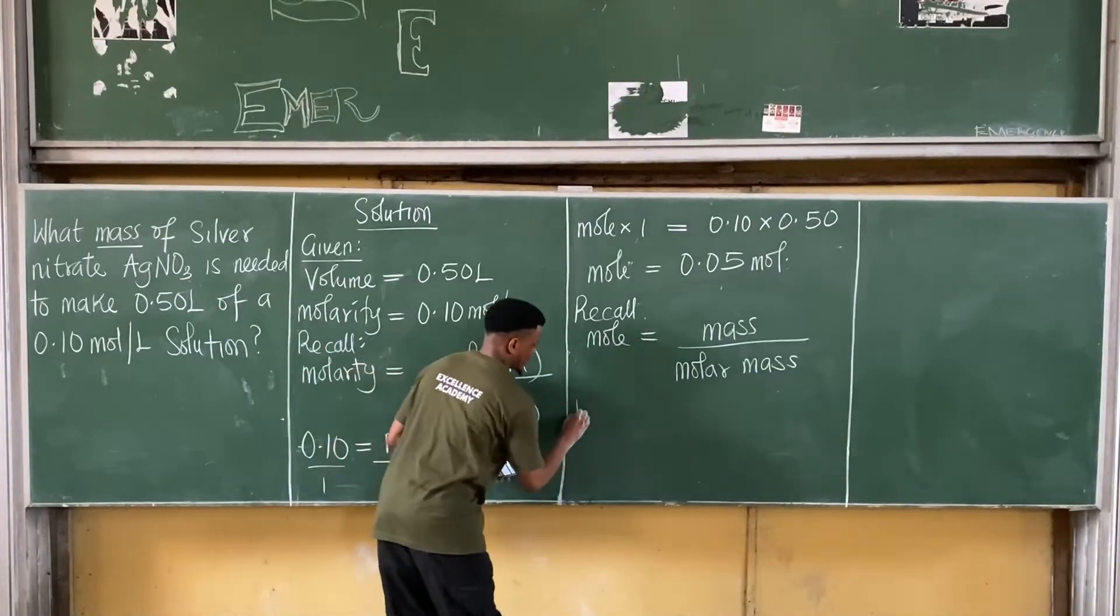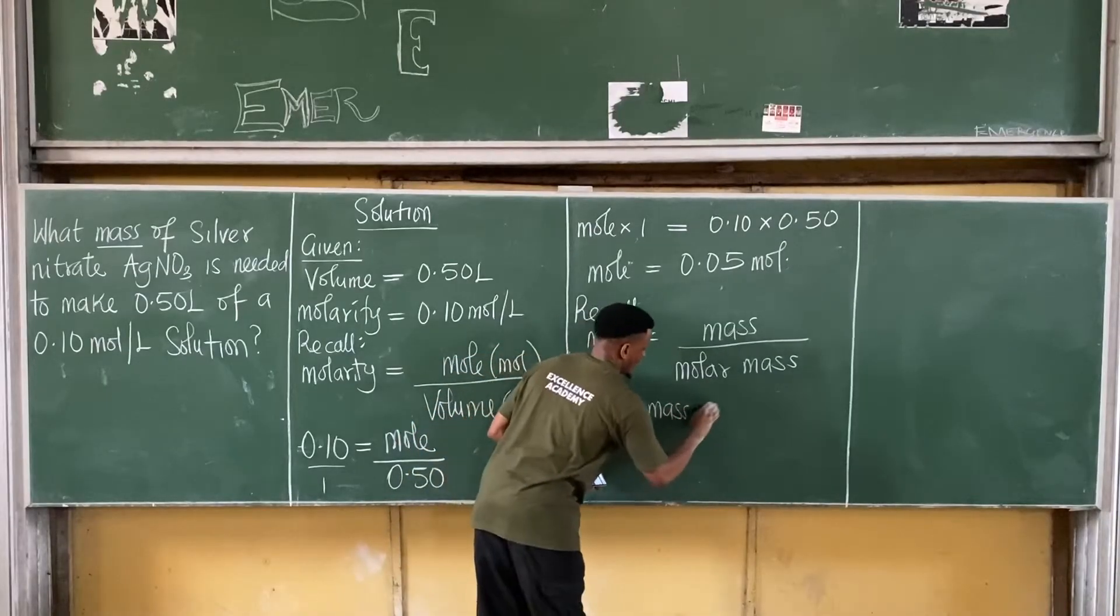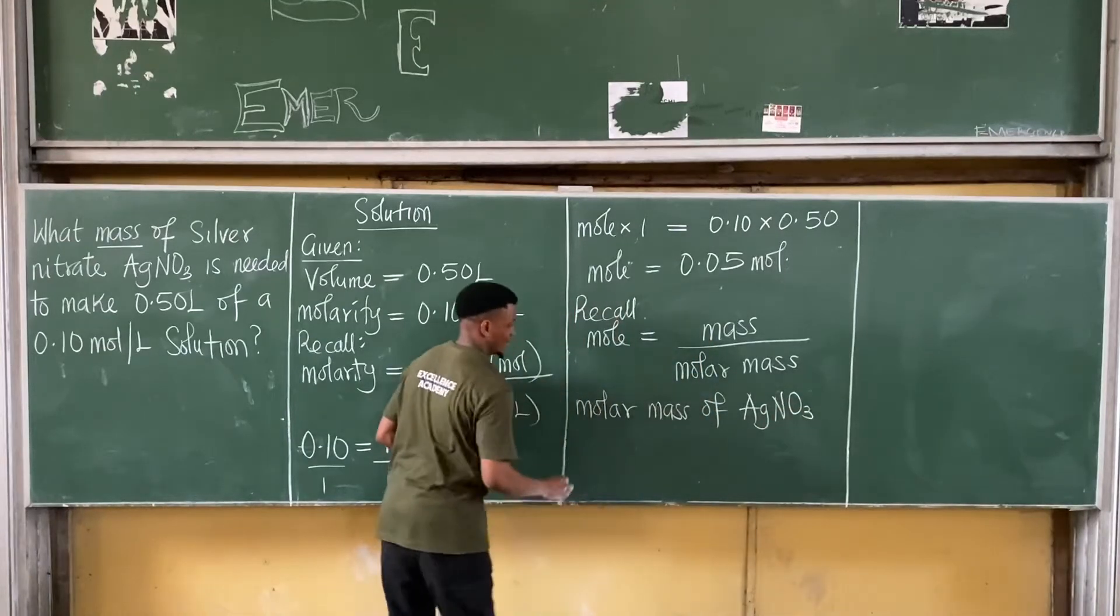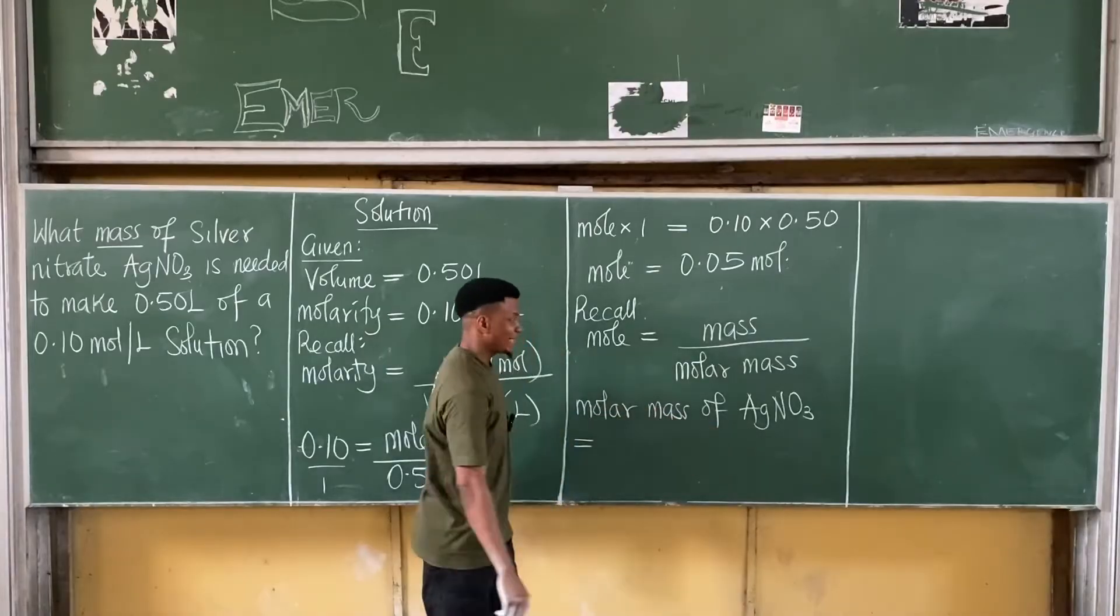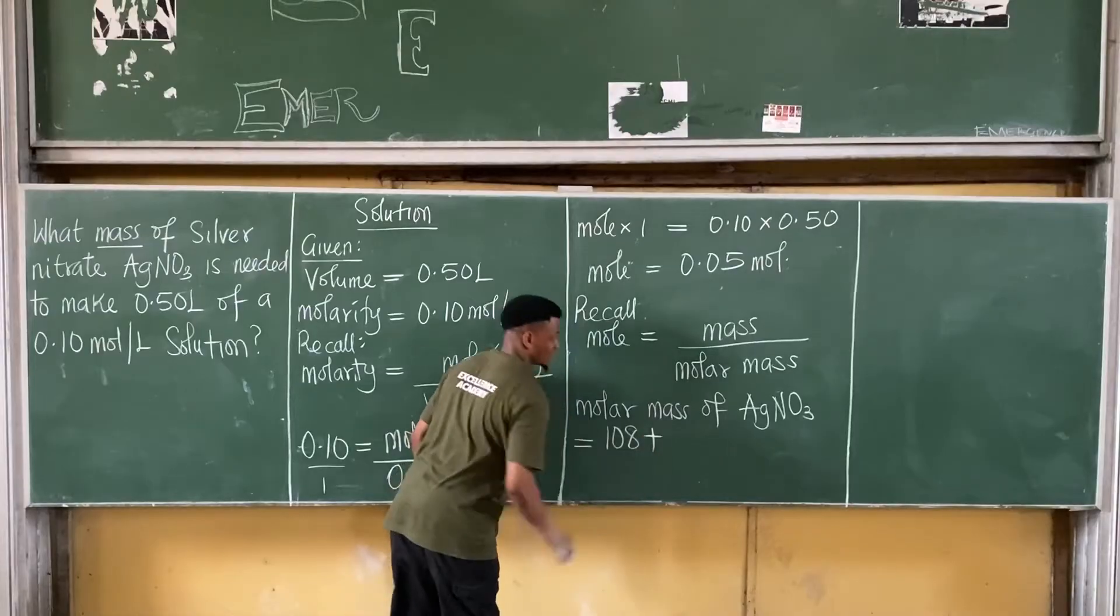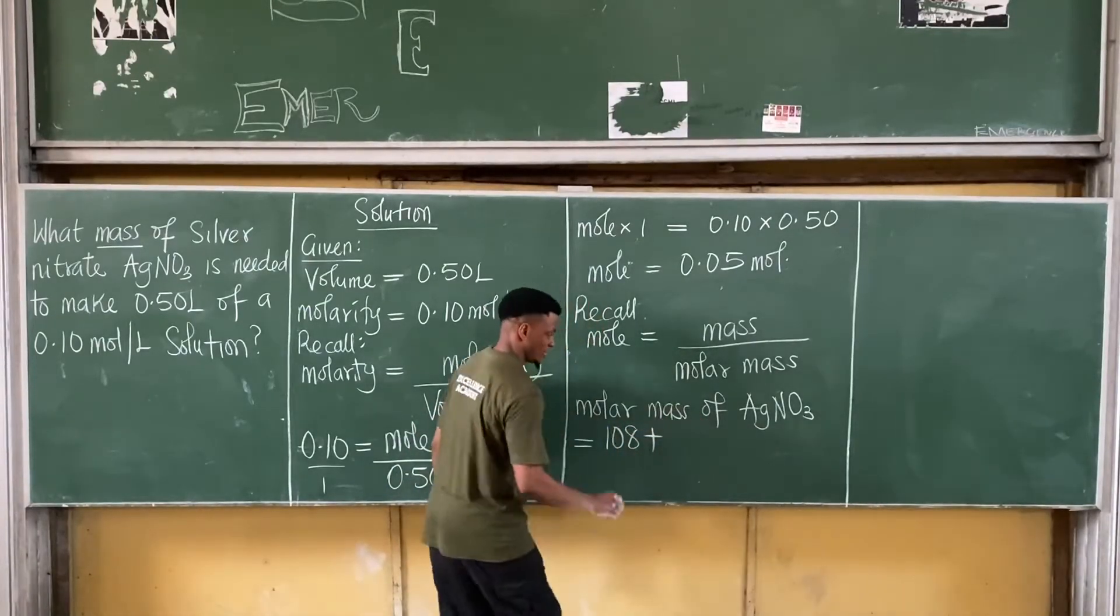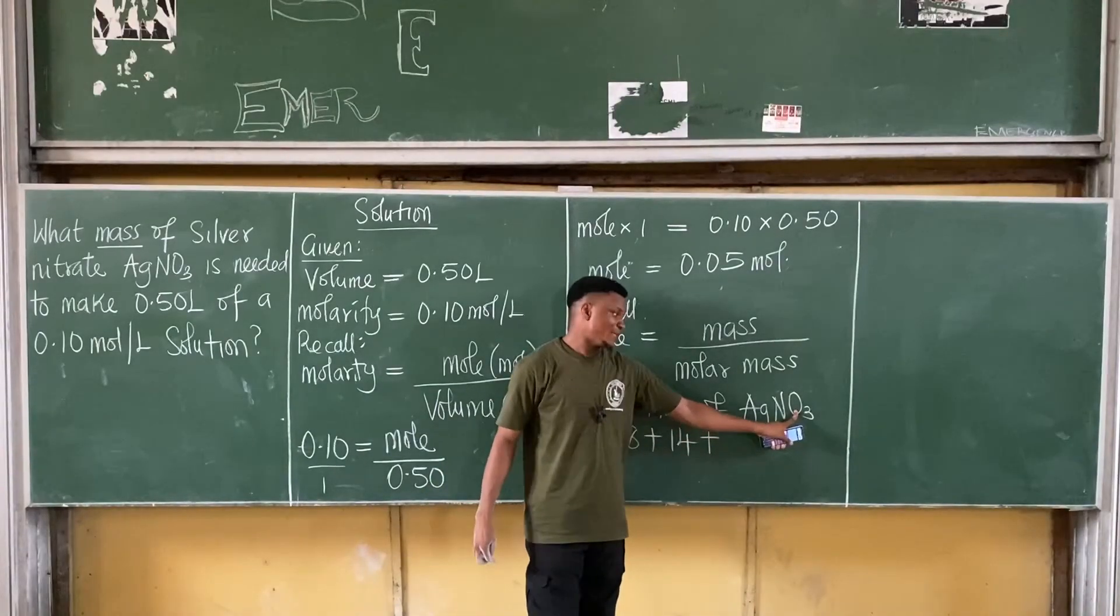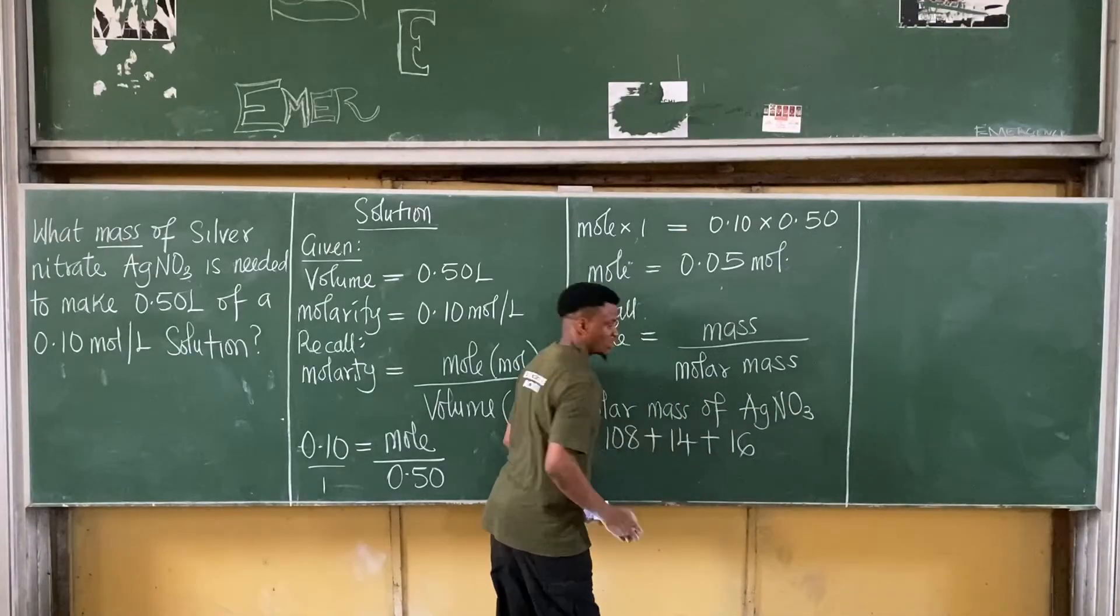So let me get the molar mass of silver nitrate. So the molar mass, the molar mass of silver nitrate, what do I have? That's equal to, for silver, the atomic mass of silver is 108. So 108 plus, for nitrogen, the atomic mass of nitrogen is 14, 14 plus, for oxygen, the atomic mass of oxygen is 16.